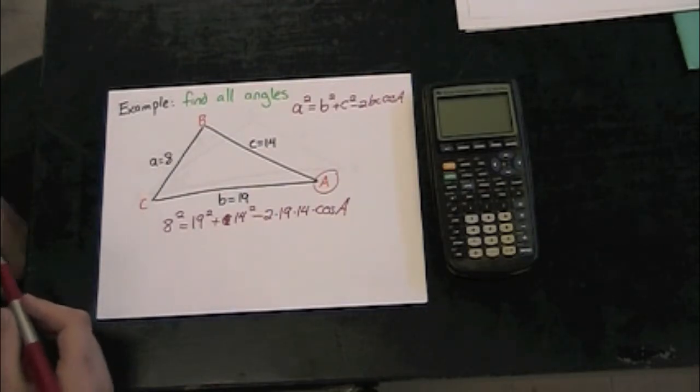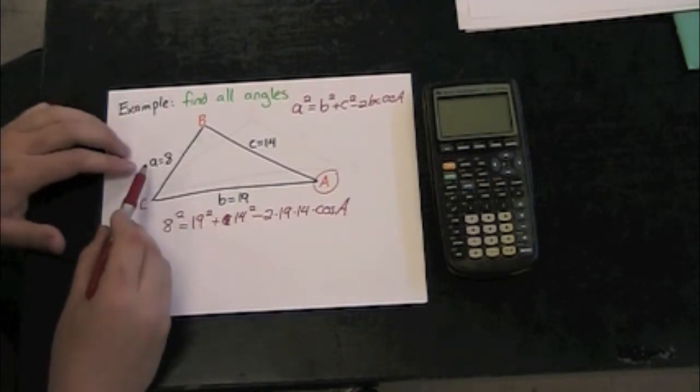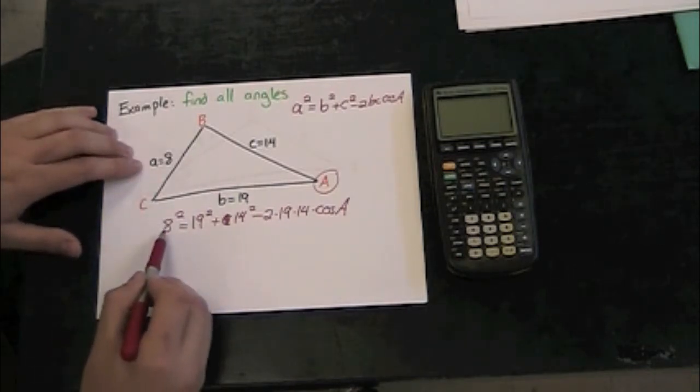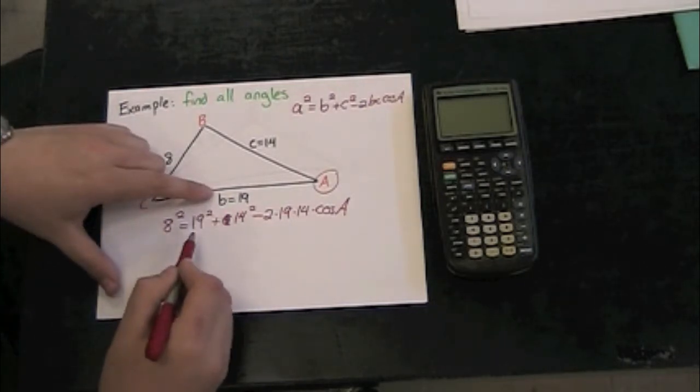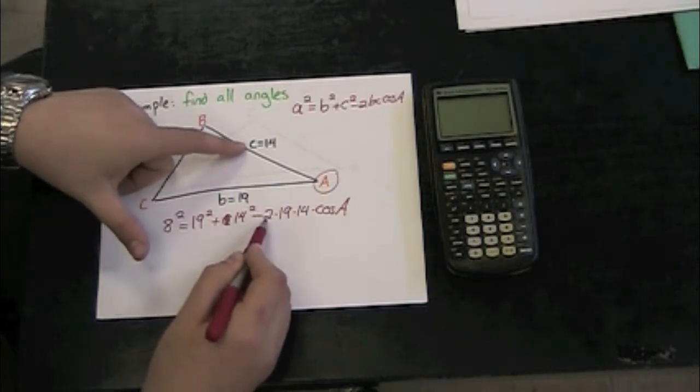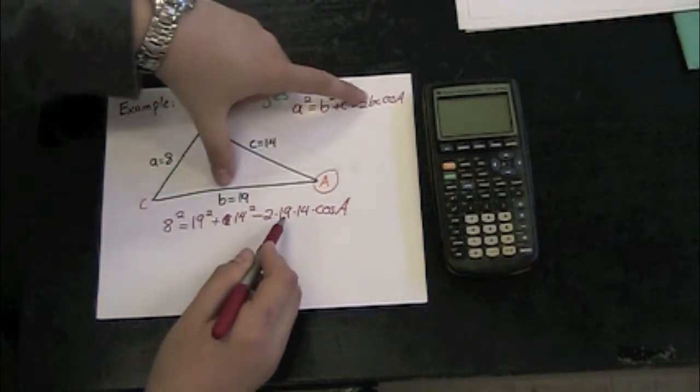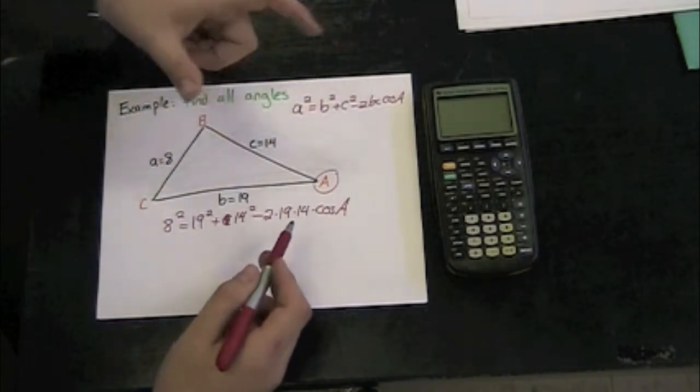Let's start by plugging in the values that we know. I know that a = 8, so I can plug that in: 8². I know that b = 19, I can plug that in: 19². c = 14, so 14² - 2 times 19 times 14 cosine of A.